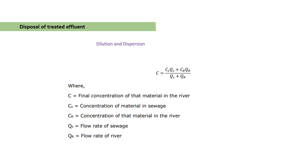For the disposal of treated effluent discharged into a river, the final concentration of a particular material in the river is: C = (Cs × Qs + Cr × Qr) / (Qs + Qr), where C is the final concentration in the river, Cs is the concentration of the material in the sewage, Cr is the concentration in the river, Q is the flow rate, with subscripts S for sewage and R for river. This is a very important formula for calculating the final concentration of material in the river.